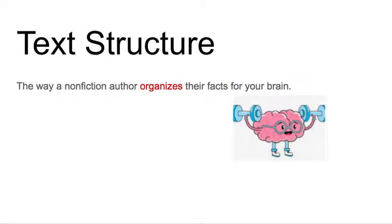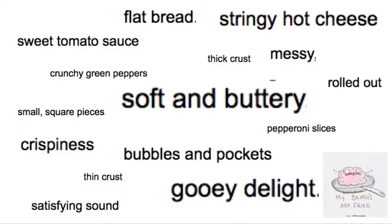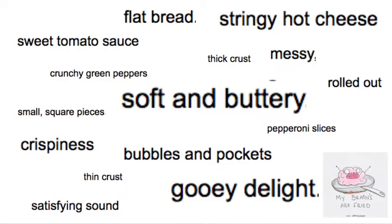One example of a text structure is called description text structure. Remember all of those facts that were not organized? Soft and buttery, bubbles and pockets, gooey delights, satisfying sound, crispiness? An author can organize those facts to help your brain.